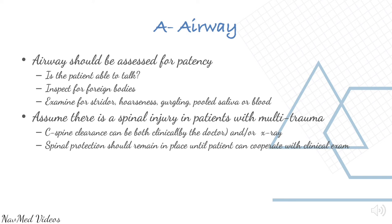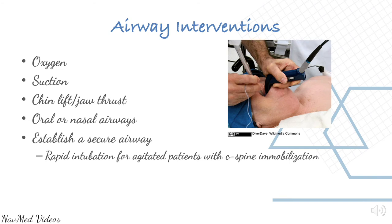To evaluate the airway, assess for patency: is the patient able to talk? Inspect for foreign bodies and examine for stridor. Assume there is a spinal injury in patients with multiple trauma unless otherwise proved. C-spine clearance can be both clinical or via X-rays, and spinal protection should remain in place until the patient can cooperate with the clinical exam. Airway interventions include oxygen, suction, chin lift, jaw thrust, oral or nasal airways — establish a secure airway.